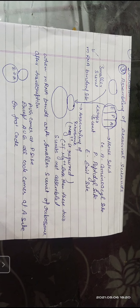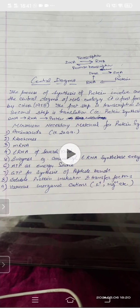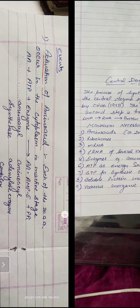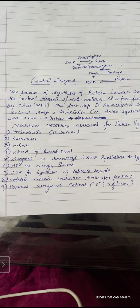The third required material is tRNA. Other requirements include mRNA, enzymes such as aminoacyl-tRNA synthetase enzyme, ATP as an energy source, GTP for synthesis of peptide bonds and soluble protein, initiation and transfer factors, and various organic cations like potassium ions and magnesium ions.